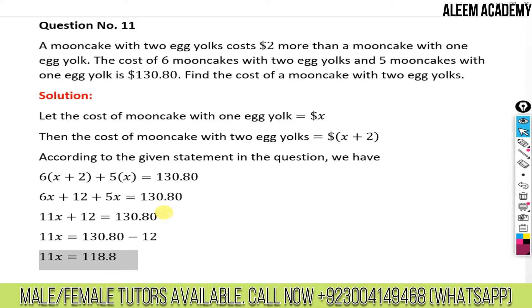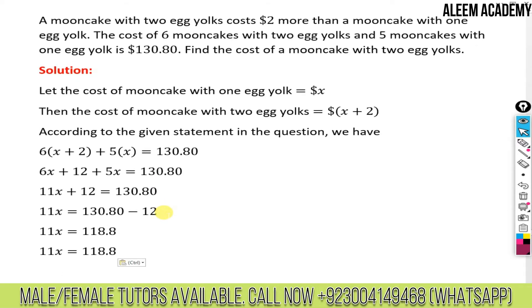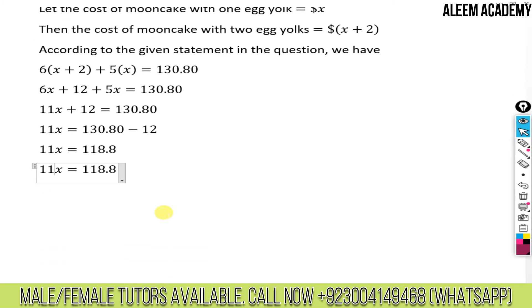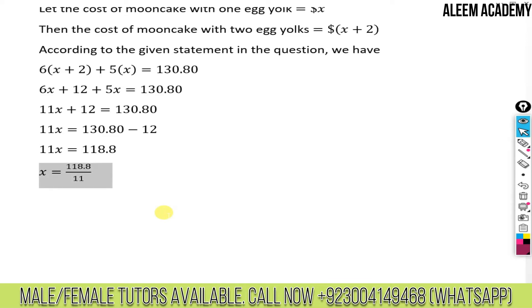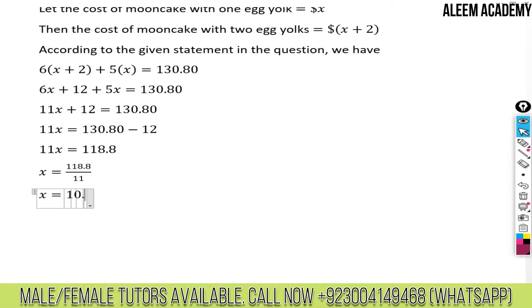Now we need to find x, so we divide both sides by 11. Using the calculator, 118.8 divided by 11 gives us 10.8. So x equals 10.8.